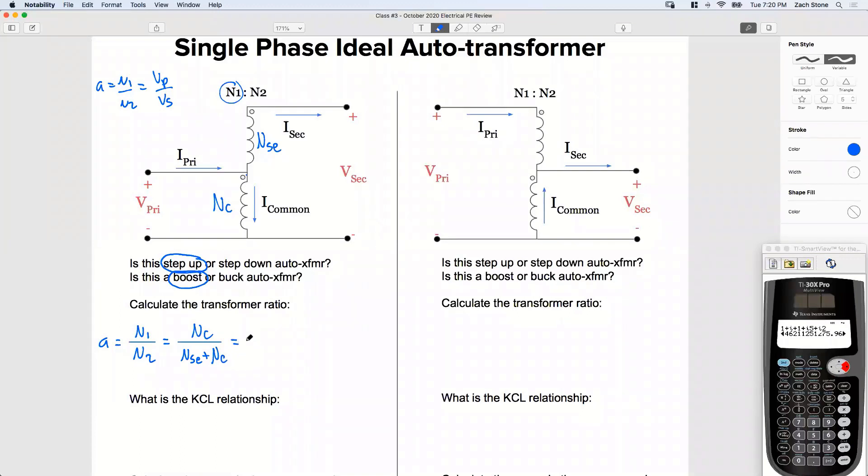Next, what about my voltage relationships? N1 to N2 means V primary divided by V secondary.